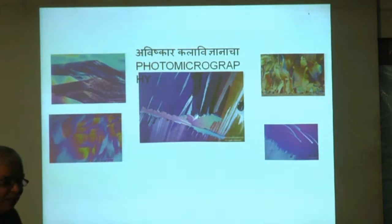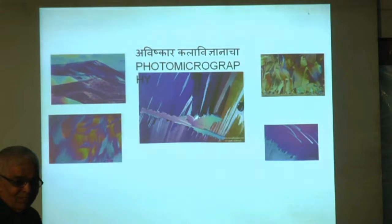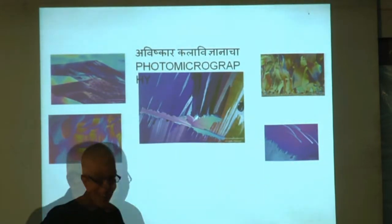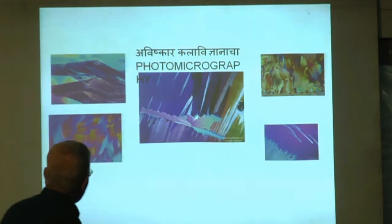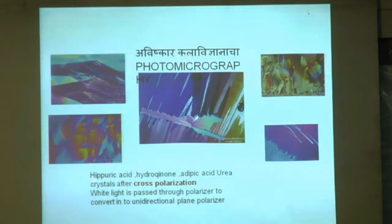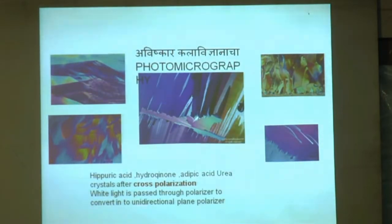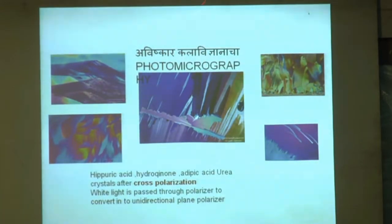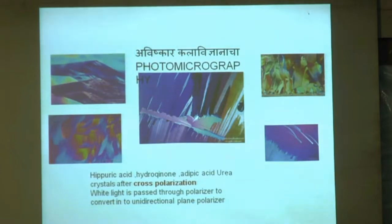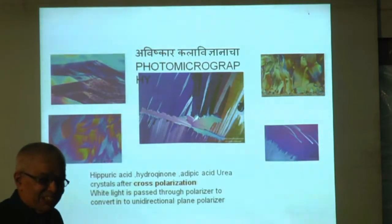My last slide: what are these pictures? These are not paintings — these are photomicrographs of several organic materials such as hypericin, hydroquinone, adipic acid, and urea. Can you imagine you can get this kind of structure from urea crystals? White light is passed through a polarizer to convert it to unidirectional plane-polarized light. Now there is a debate whether these can be copyrighted. It was said you cannot because the original urea crystals cannot be reproduced. As arts and science intersect, several legal issues arise.